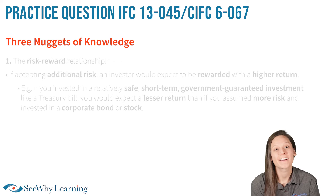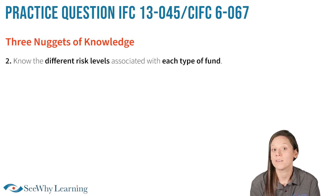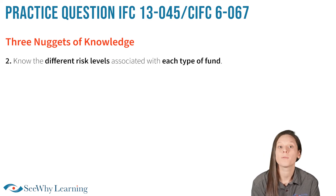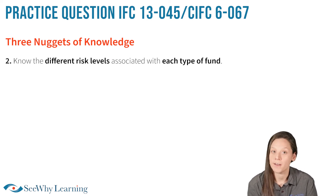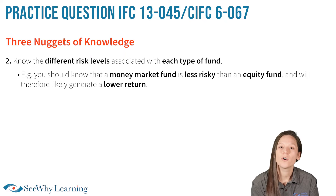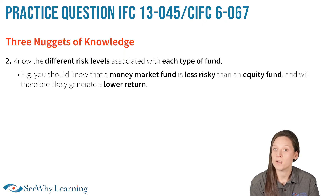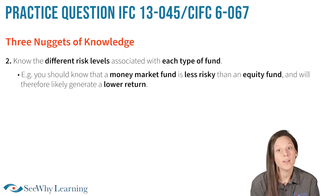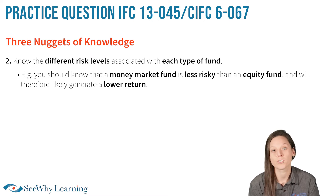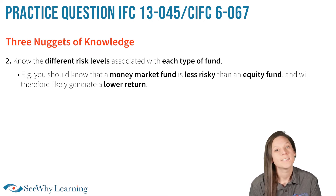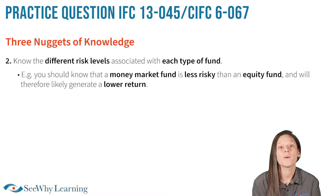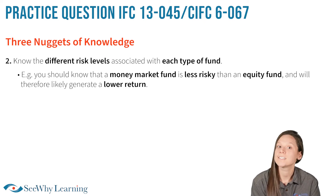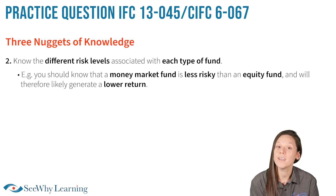The second nugget of knowledge is knowing the different risk levels associated with each type of fund. For example, you should know that a money market fund is less risky than an equity fund and will therefore likely generate a lower return. To help remember the basic fund types, you'll find a great little story and memory aid in the CY study guide, and I want to share it with you here as well.